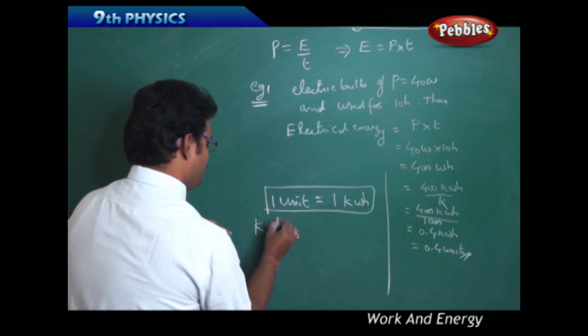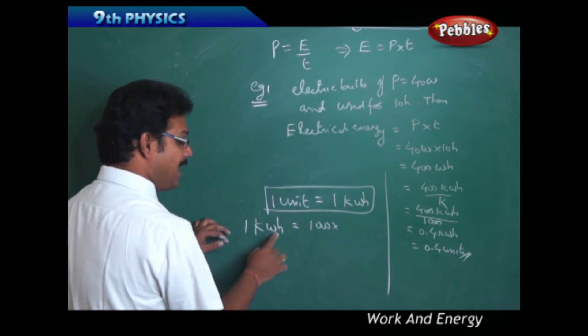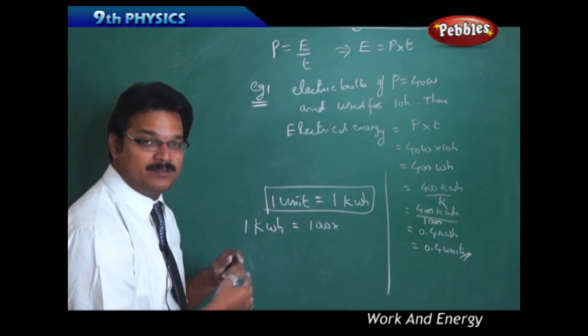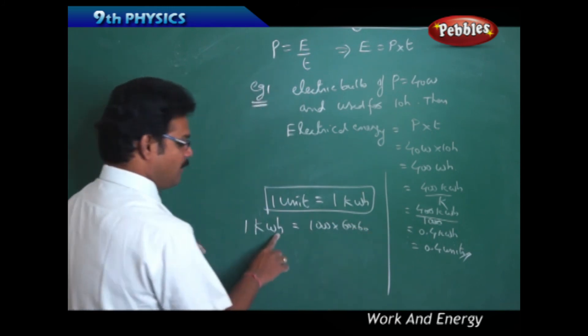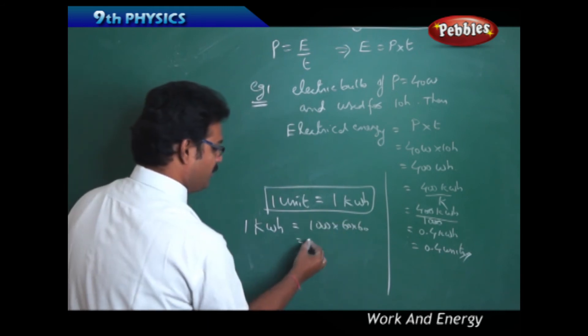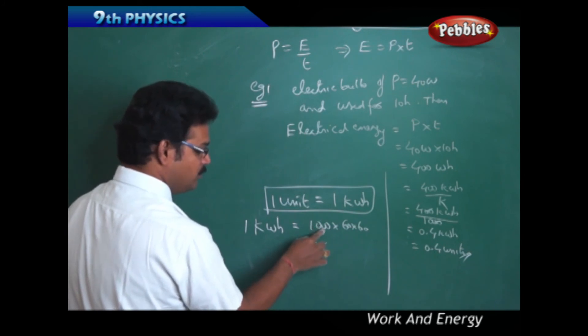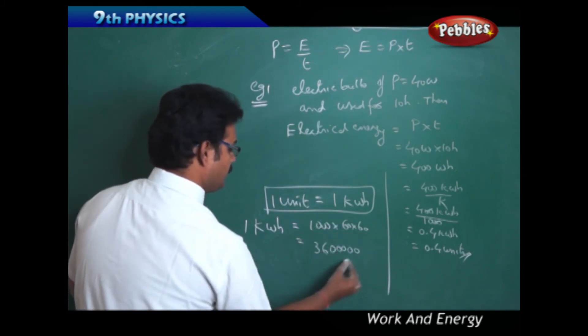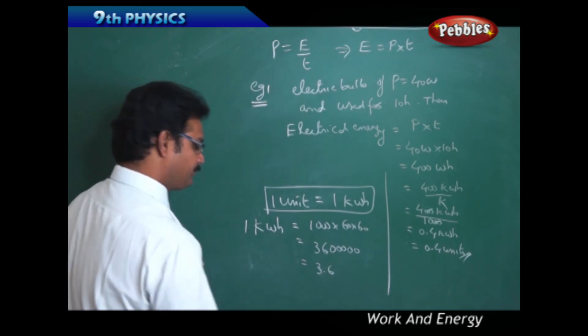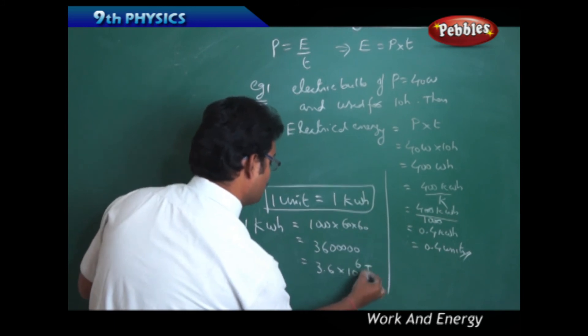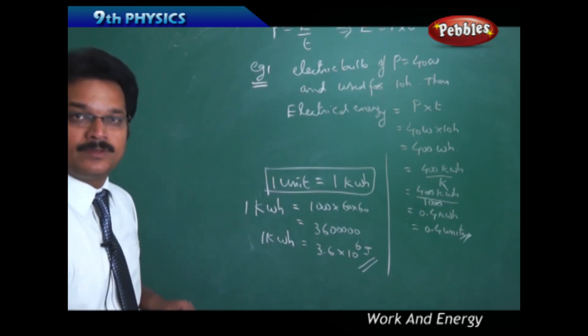1 kWh equal to 1 kilowatt means 1000 into 1 hour. 1 hour, 60 minutes. 1 minute, 60 seconds. So 60 into 60 seconds. 1 hour is converted into 60 into 60. So therefore you can write 36 into 36 into 1 2 3 4 5, 5 zeros. Therefore you can say 3.6 into 10 power 6 joules is what 1 kWh is.